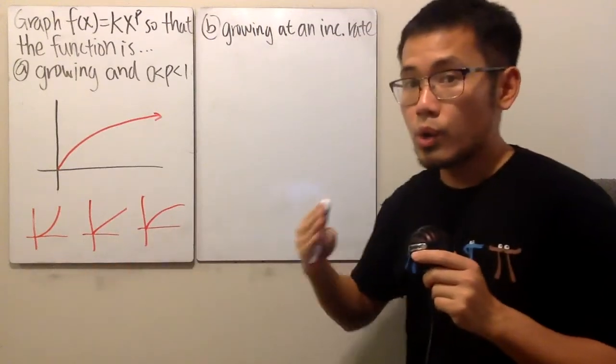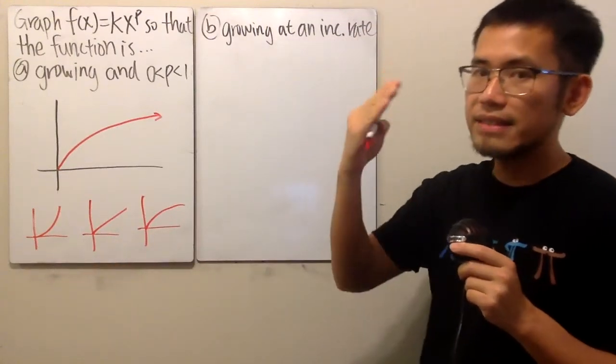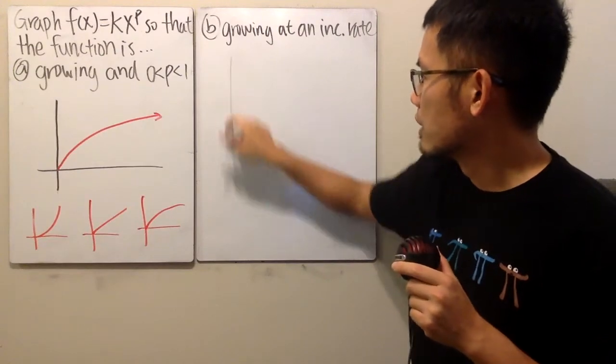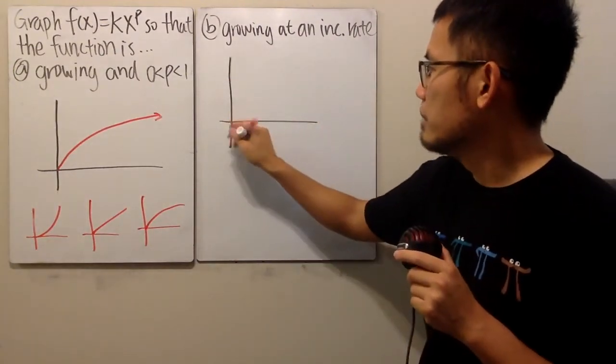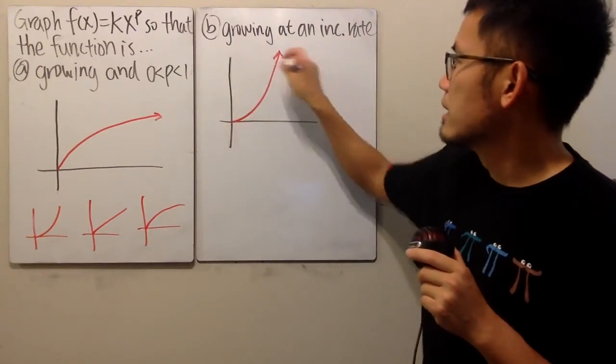This is where you are growing - each time it's faster and faster. So you will have a curve curving up like that. You just have to give me an example like this and you are done.